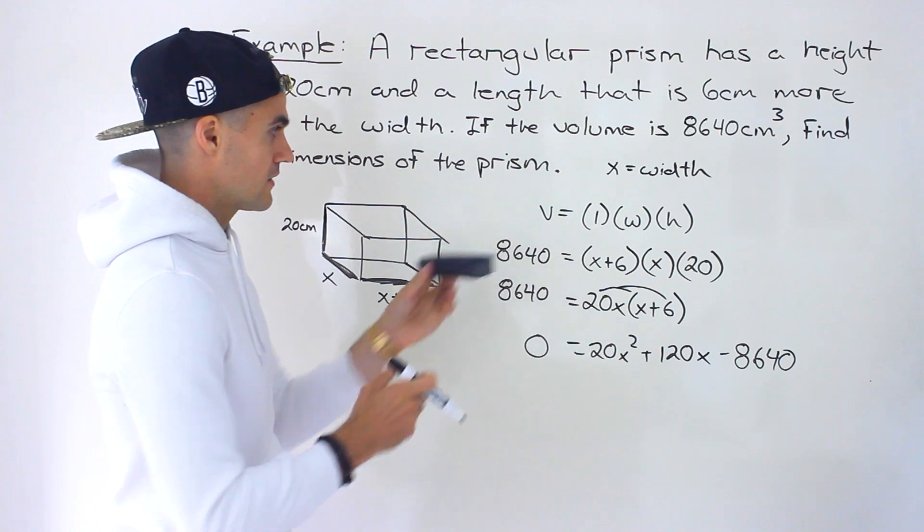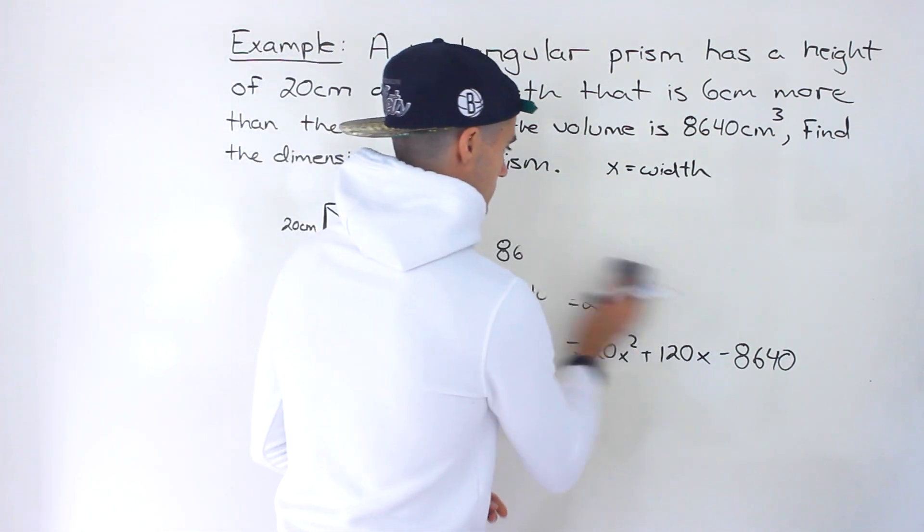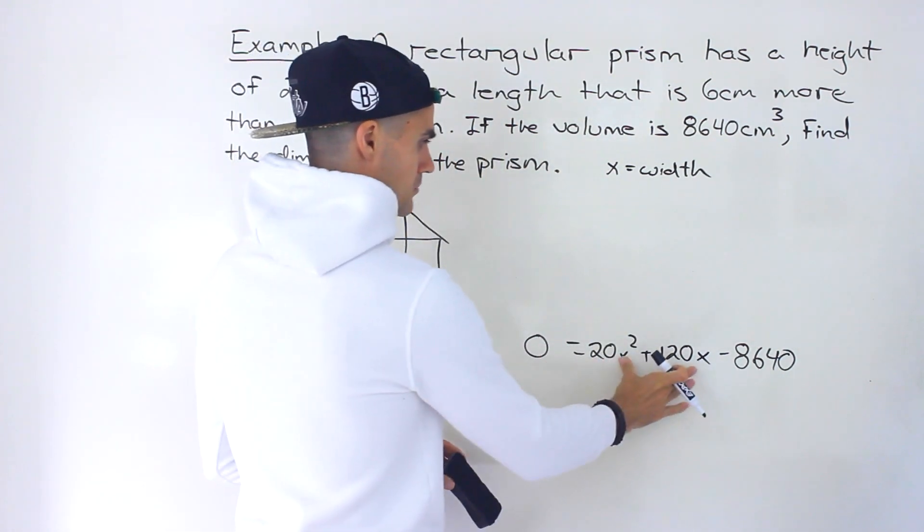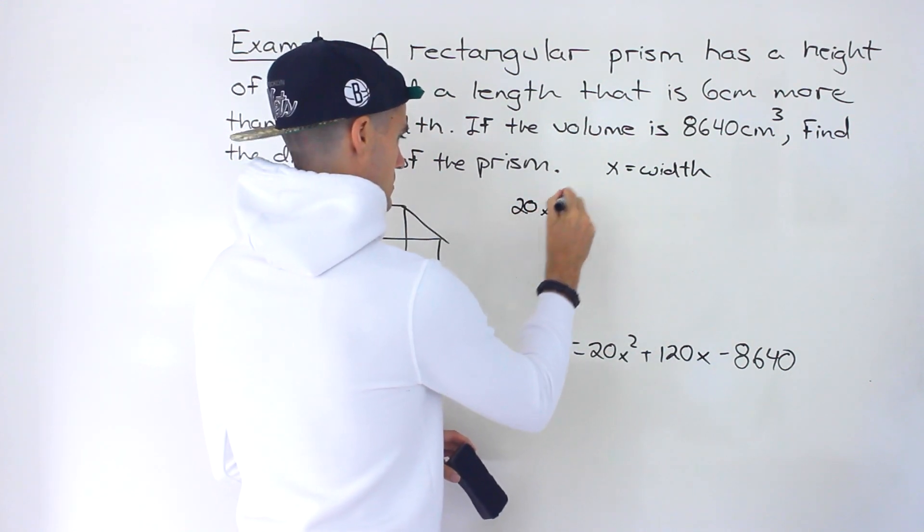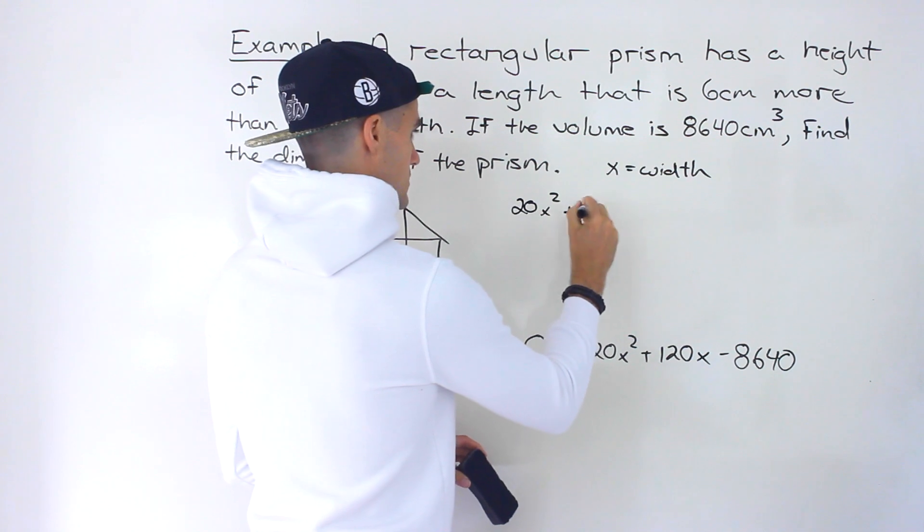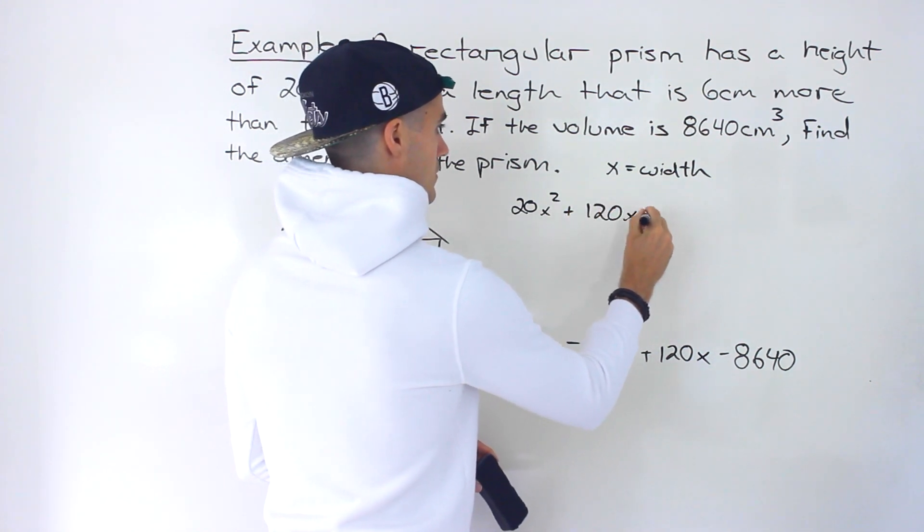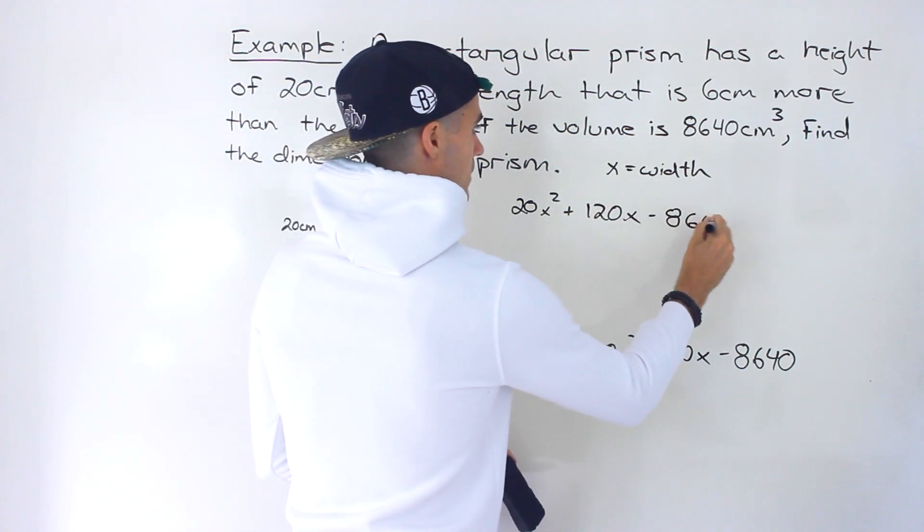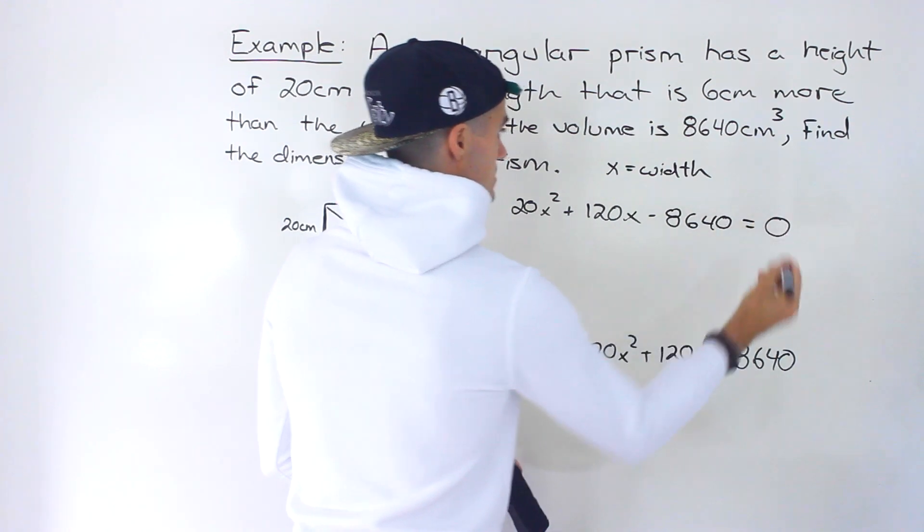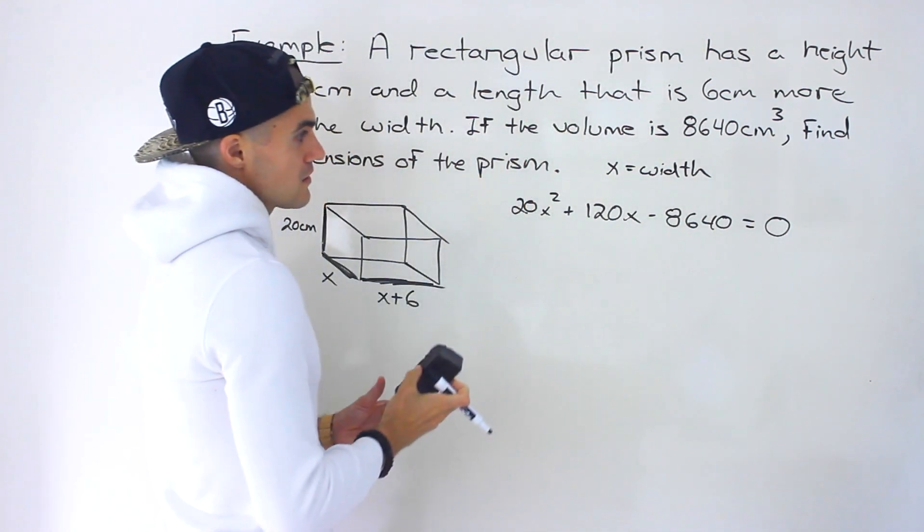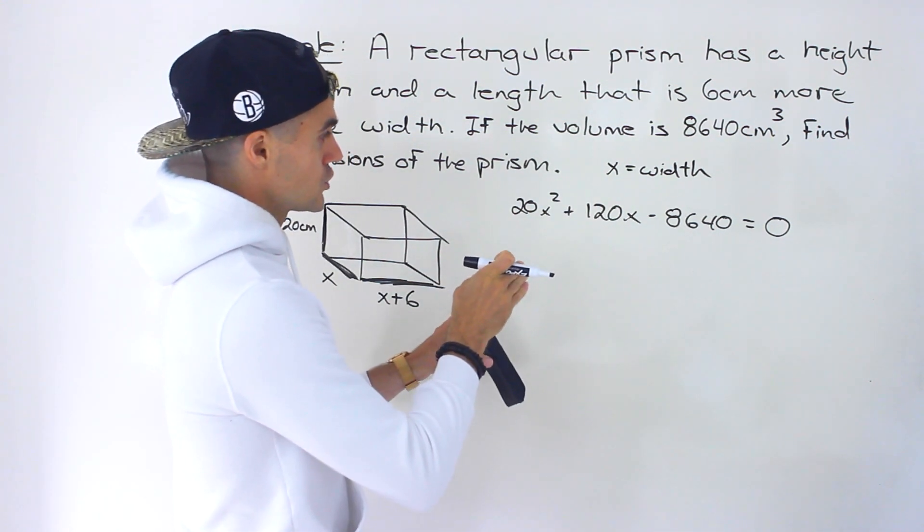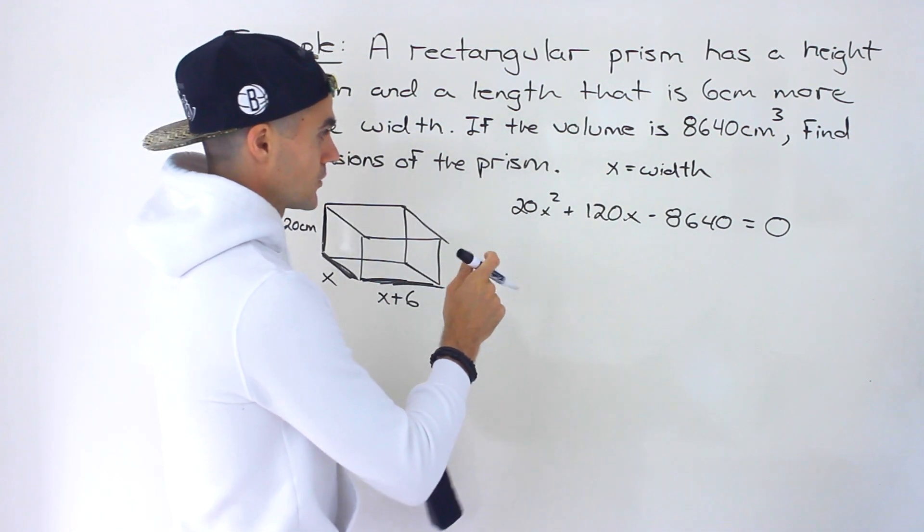Notice that now we have this quadratic equation. I'm gonna put this on the left side instead just to make it look a little nicer. Basically just switch the sides like that. From here what we can do is solve this quadratic equation. Let's do it with factoring.